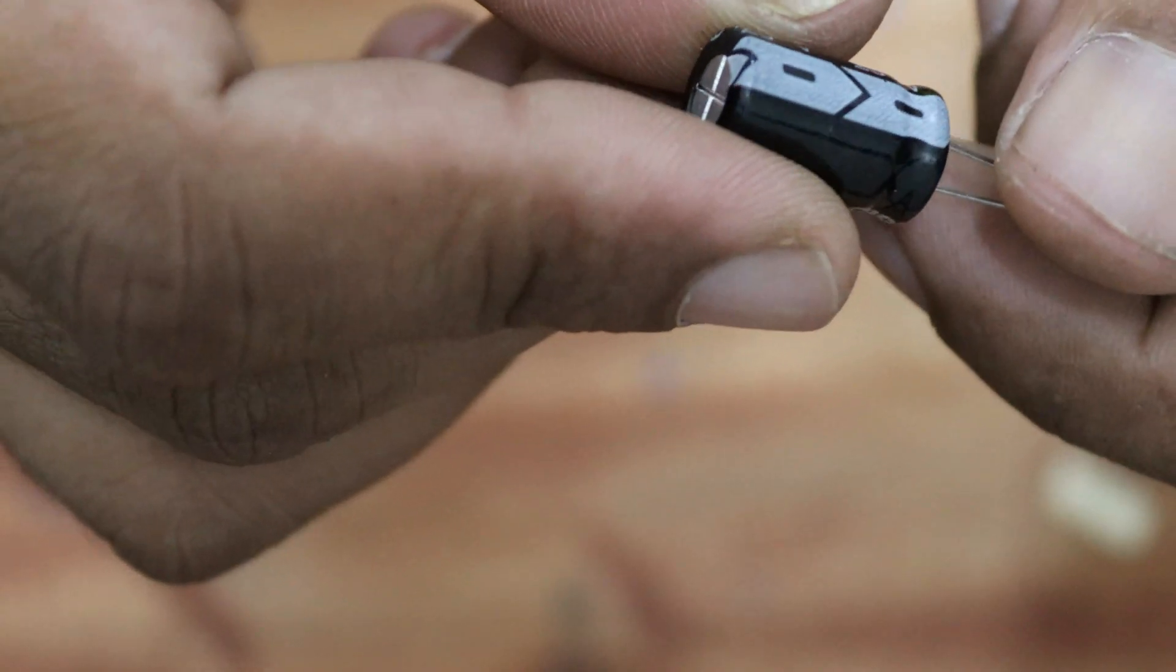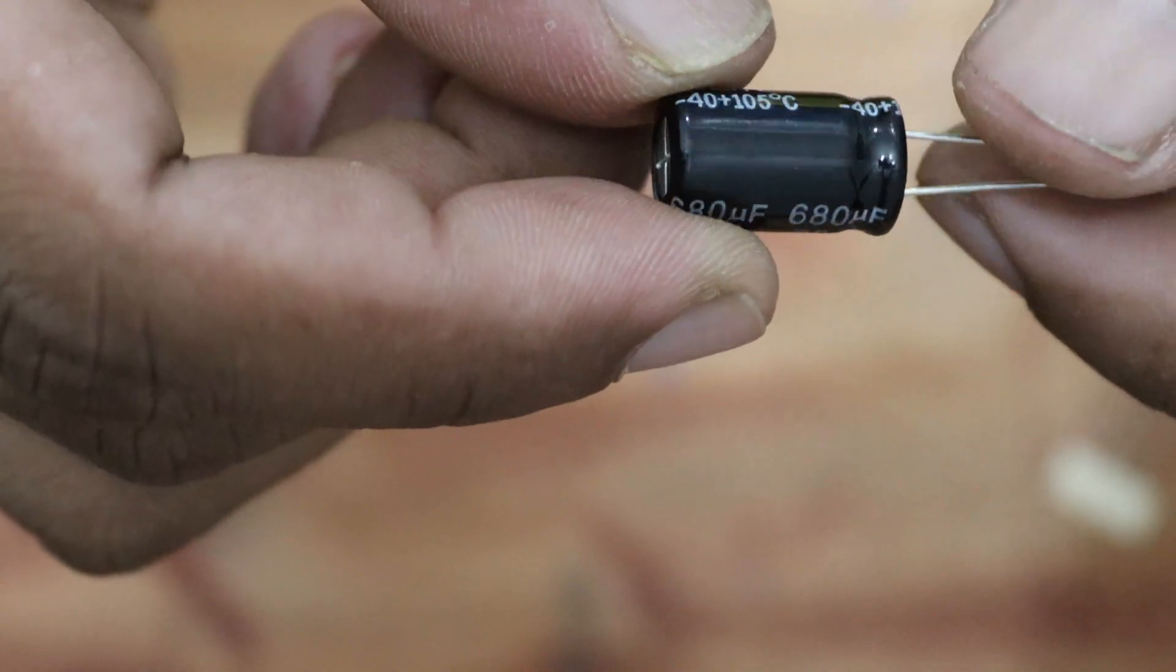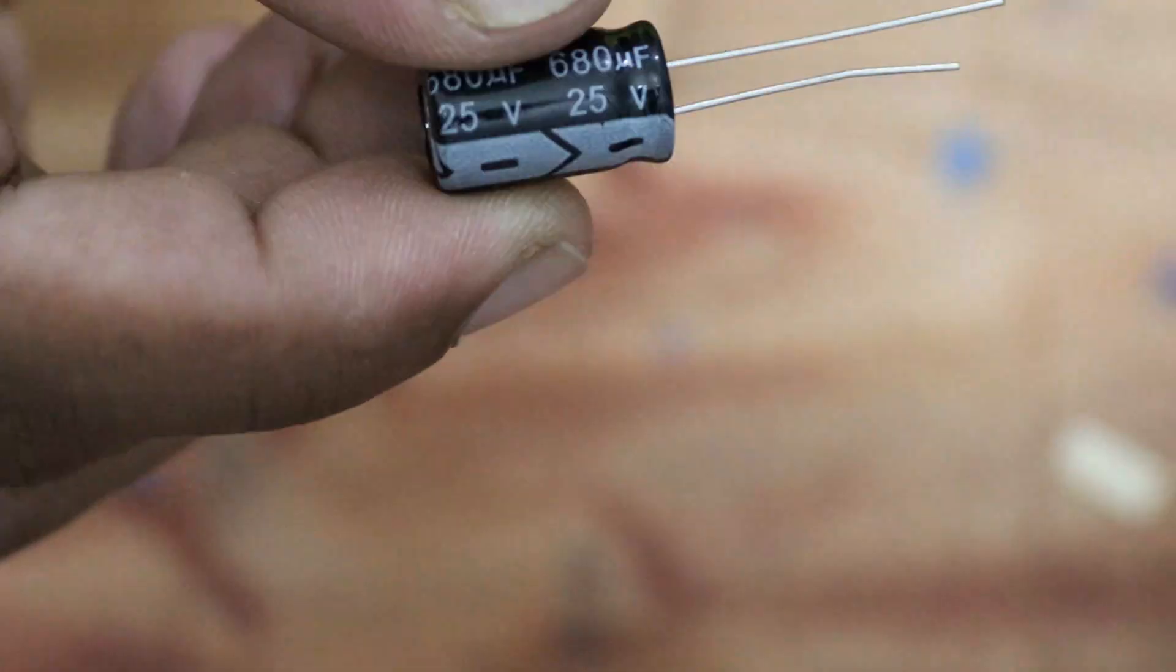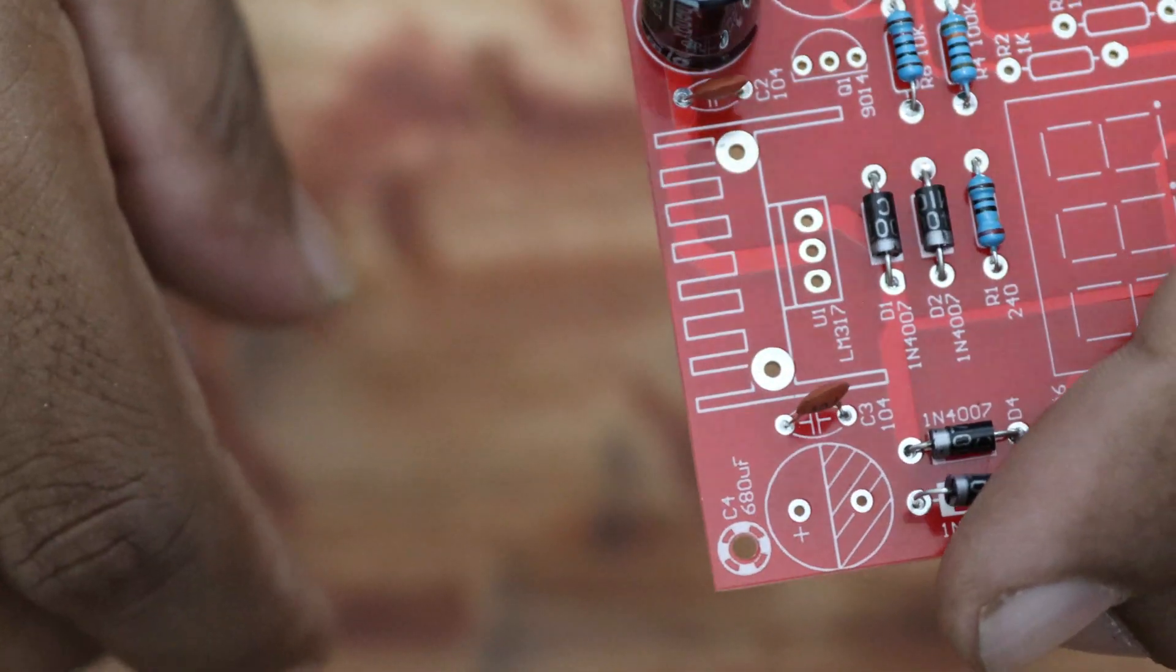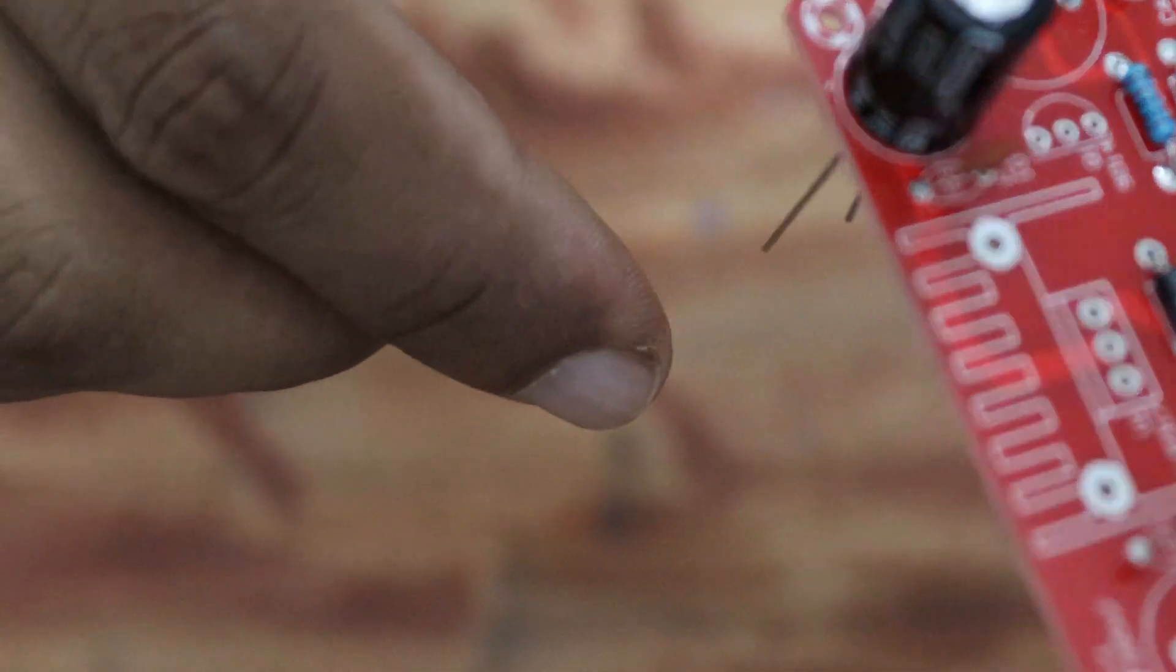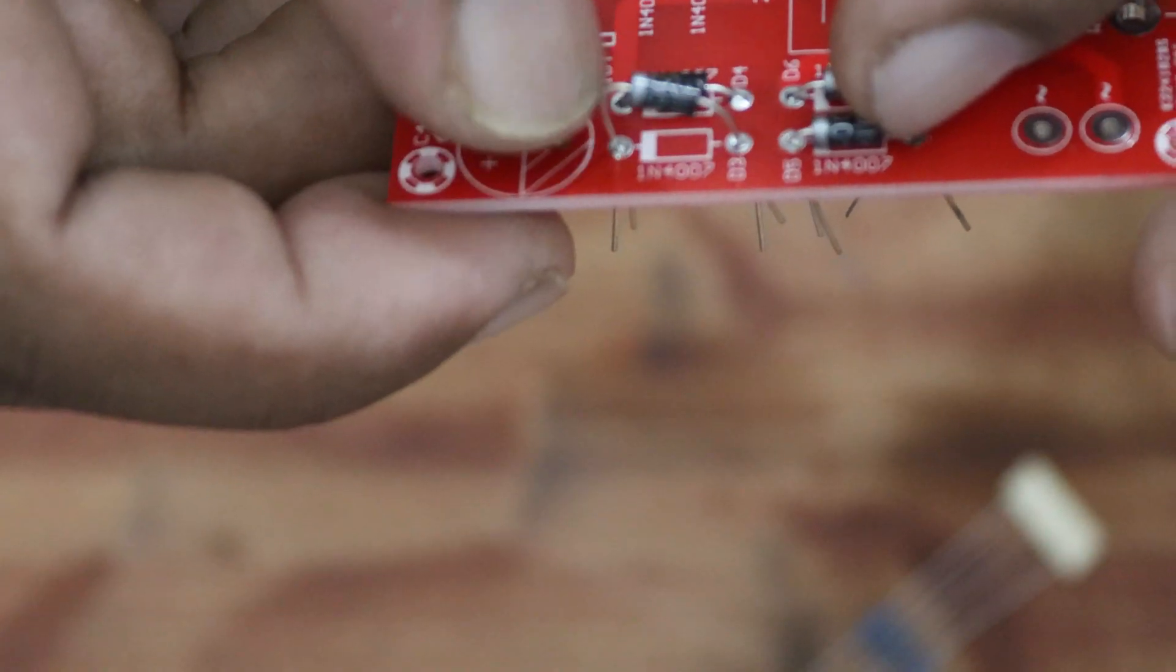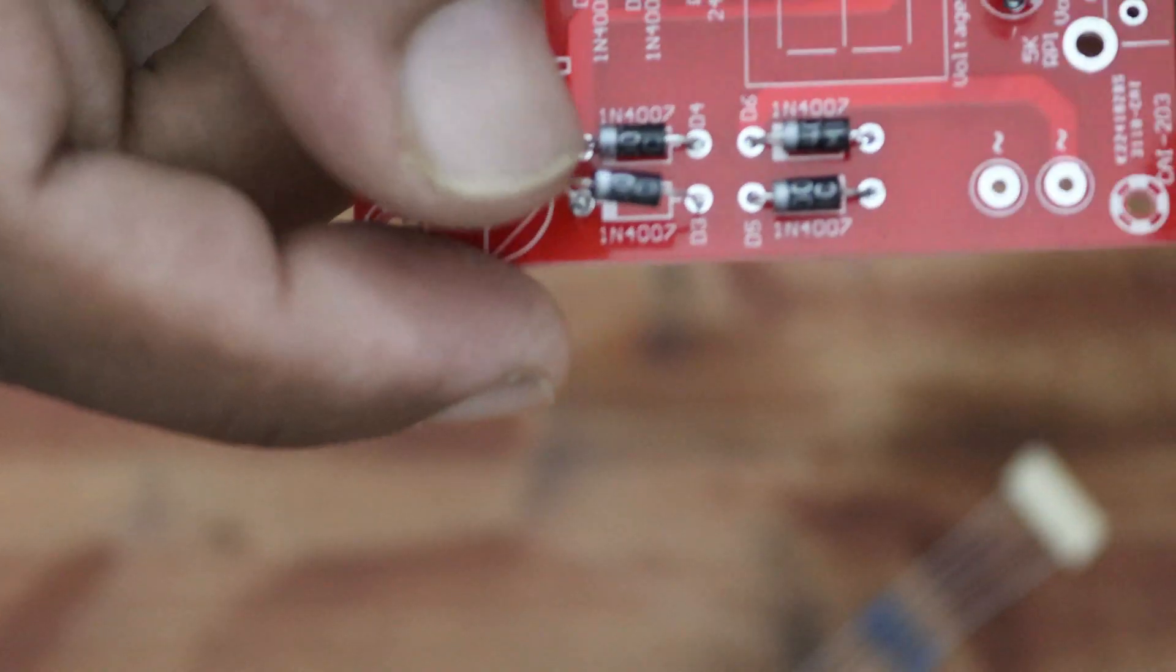Identify the positive and negative pins of the capacitors before soldering those. Find the correct direction of the diode before soldering to the board.